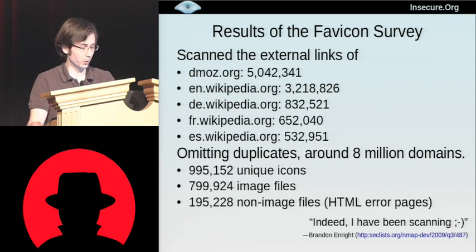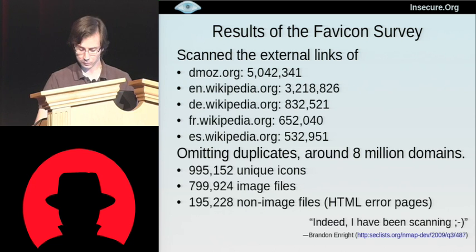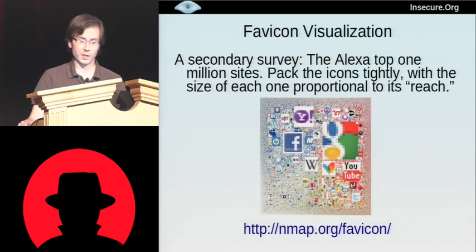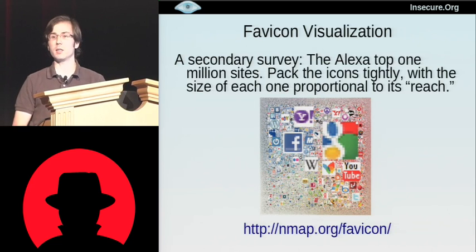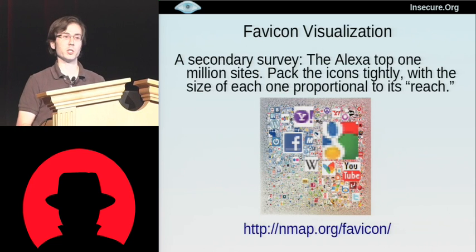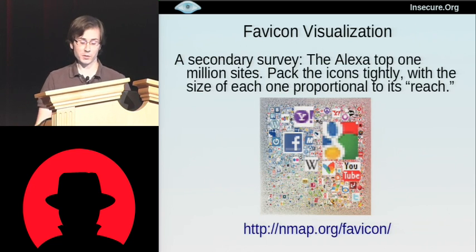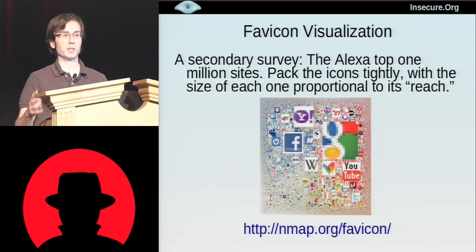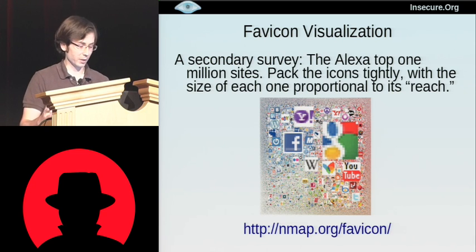So we tried to think of something more creative to do with this. We ended up doing a second scan of the top 1 million web domains as published by Alexa. They published their top million domains, and also a number they call 'reach,' which is a measure of how many people visit a site in a day or week. We had the idea to get these icons, pack them together into a graphic visualization, make the size proportional to the reach, and just see what it looks like.